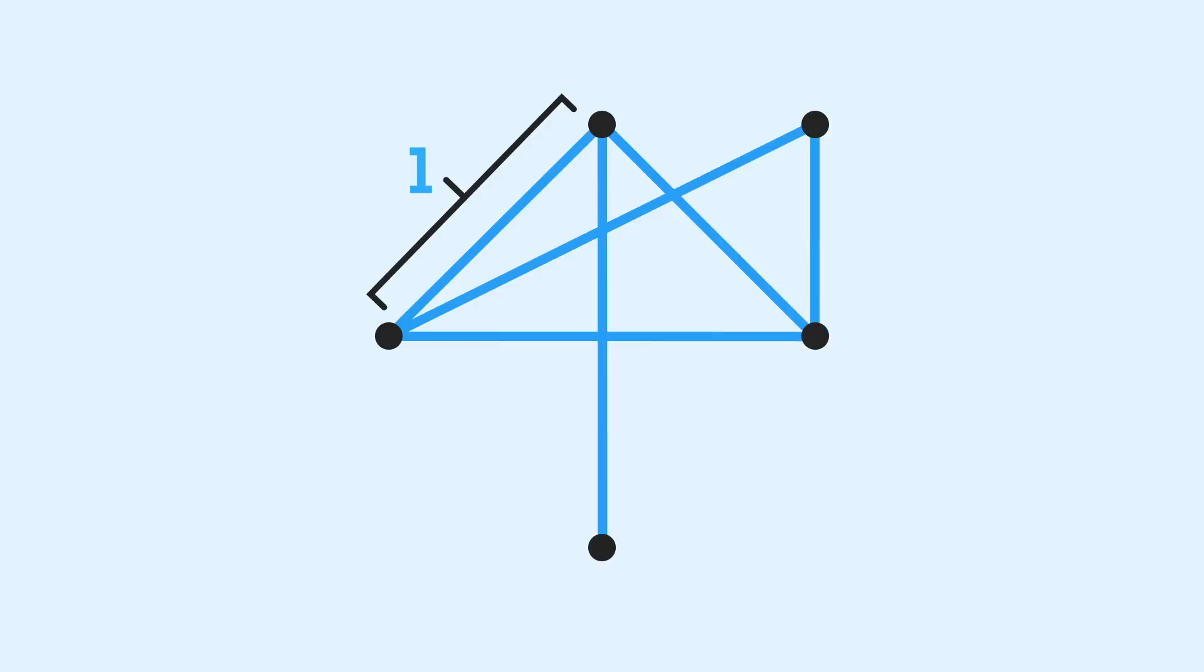Remember, we're assuming this is the first value of n for which this counterexample exists. Now, I won't prove this, but notice how this point is part of three maximum pairs.